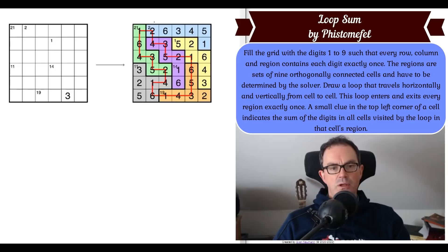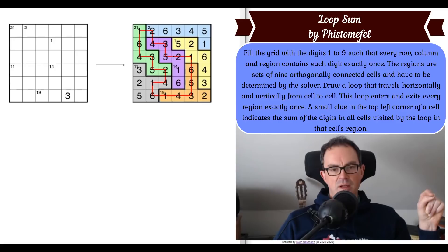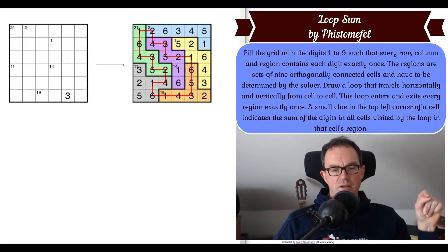In the example, the blue region has a small clued two, and the loop only takes the cell containing a two. In the purple region with clue 14, the loop cells - two, three, four and five - do add up to 14. I can see what's going on: 19 for the orange region and 11 for the gray region. What a fascinating idea.